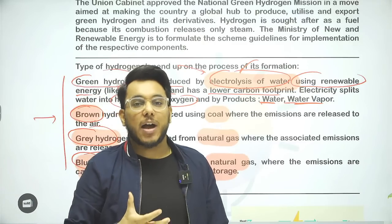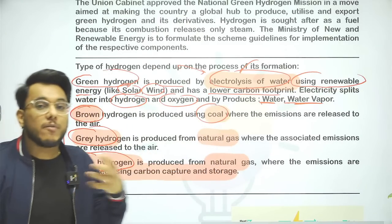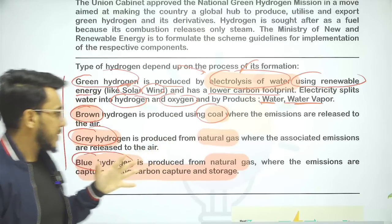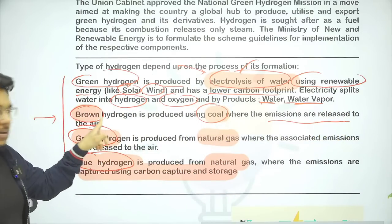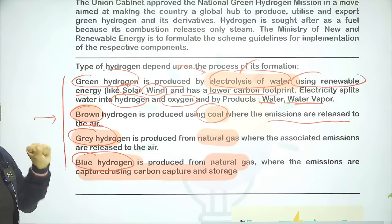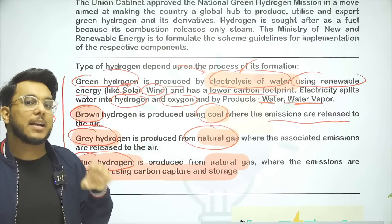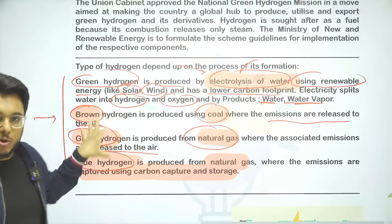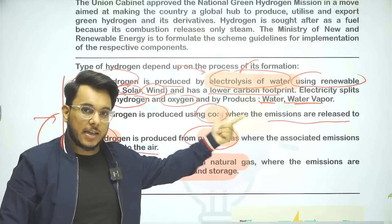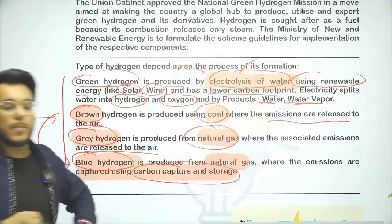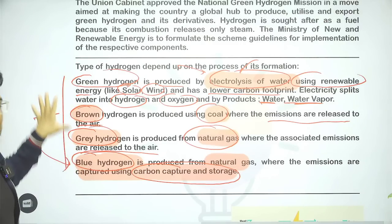Brown hydrogen is produced using coal-powered electricity for electrolysis, and emissions are directly released in the air — not very clean. Grey hydrogen uses electricity produced from natural gas for electrolysis, and whatever emissions occur are also released into the air. Blue hydrogen also uses natural gas for generating electricity, but the emissions are captured and stored. So among the types: green hydrogen and blue hydrogen are environmentally more sustainable. Green hydrogen is the most sustainable because carbon footprint is negligible or nil. Therefore, the government is focusing on green hydrogen.